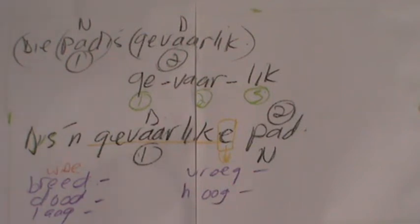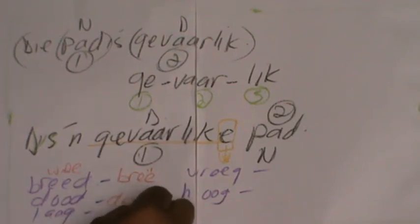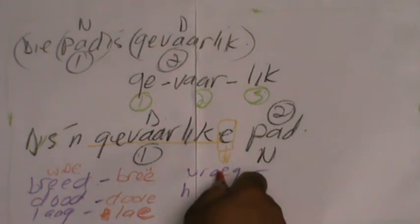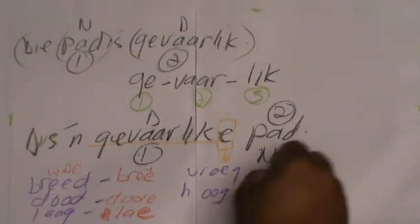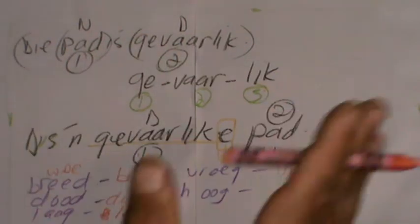So now we have to put it in attributive form: 'dit is 'n breë rivier'. So those changes take place - they want us to learn these words as they are. 'Die man is duur' - 'dit is 'n duur man'. 'Die water is laag' or 'die dak is laag', then 'dit is 'n lae dak'. Vroeg - 'dit is vroegogend', 'dit is 'n vroegogend'. 'Ek drink koffie in die vroegogend' - 'ek drink koffie in die vroeg ogend'. So that's the changes that have to take place in attributive form.